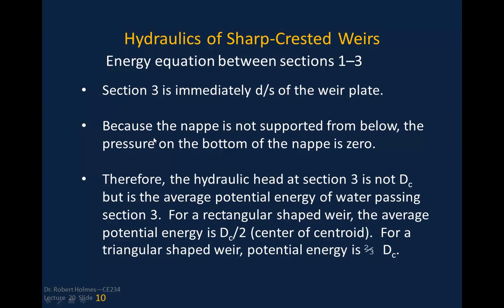The nappe is not supported from below, so the gauge pressure on the bottom of the nappe is zero, and the gauge pressure on top is also zero. Therefore, the hydraulic head at section three is not dc (critical depth) but the average potential energy of the water passing section three. For a rectangular-shaped weir, the average potential energy is dc/2 — the centroid of that location. For a triangular weir shape, it would be two-thirds dc.